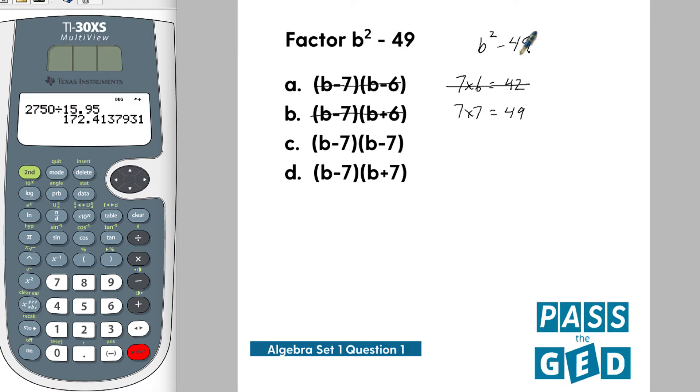And so now we need to think, how do we get effectively negative 49? Because this is minus 49. The way that you would get that is if you had one negative and one positive, which is going to give you d.